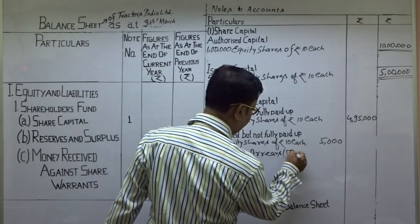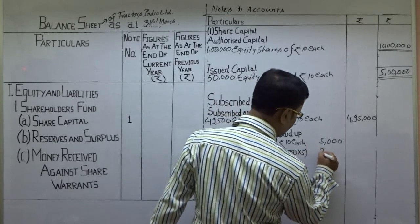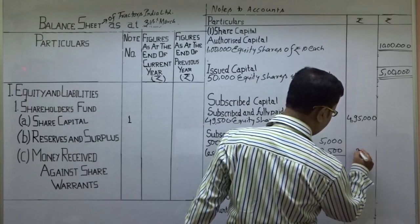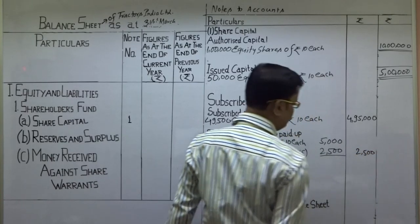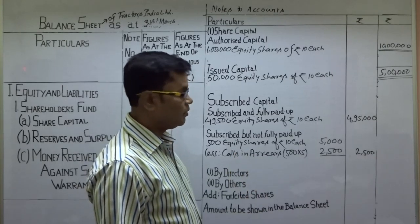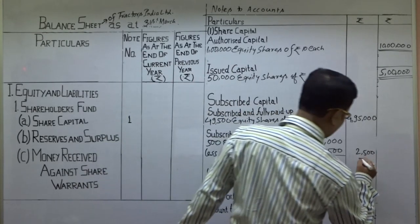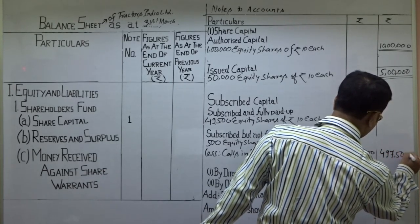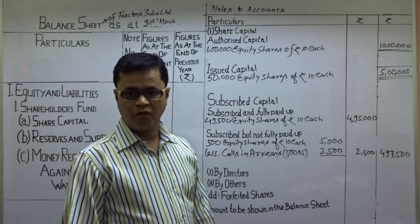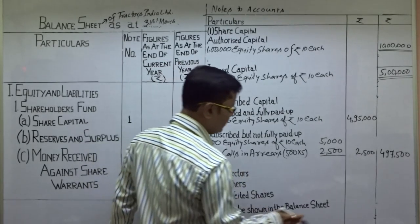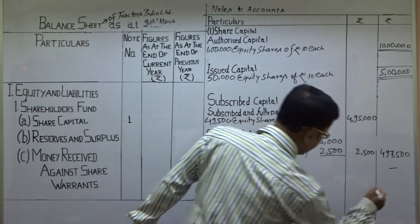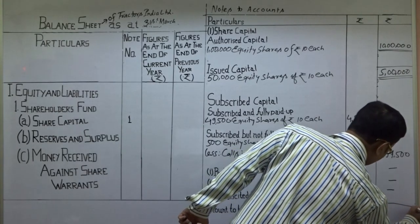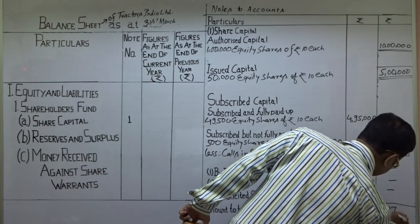Call in arrears 2,500 — okay। तो subscribed and fully paid में total amount कितना receive हुआ — 4,97,500। 49,500 shares fully paid at Rs 10 each = 4,95,000 and 500 shares partial = 2,500, total received = 4,97,500। Directors और others का कुछ नहीं — total 4,97,500।